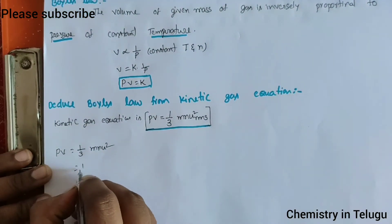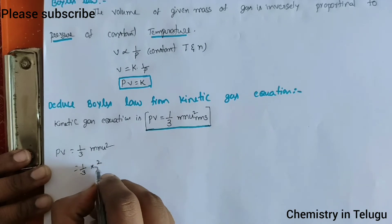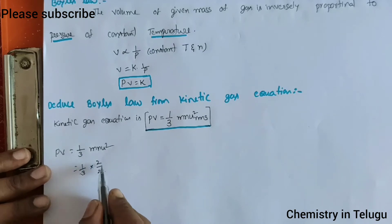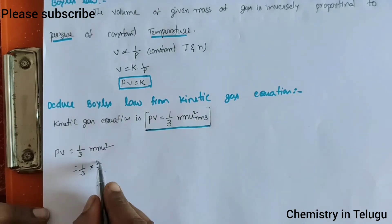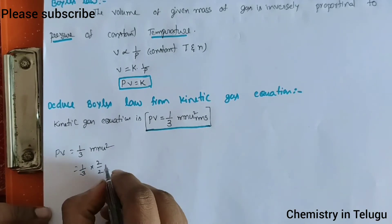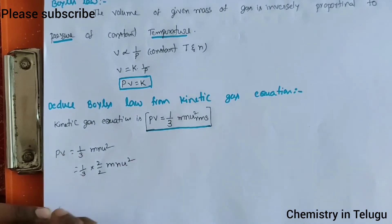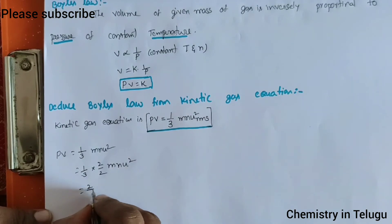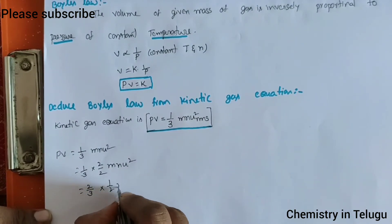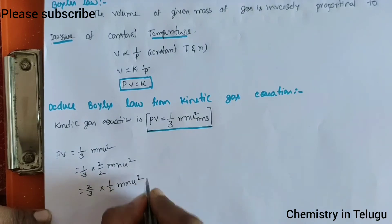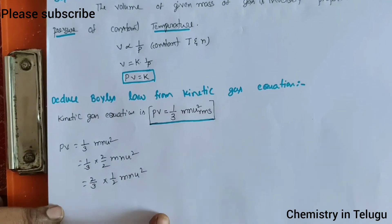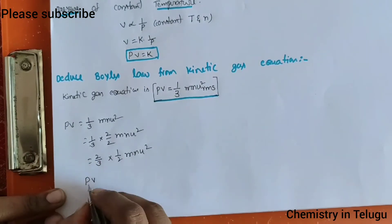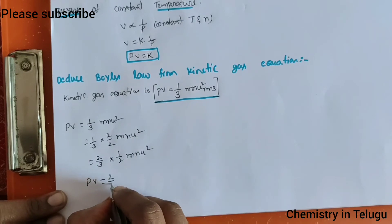Multiplying 1/3 with 2/2 — so 2 by 2, where u is nothing but 1. So the value is equal to 1/2. So 2 by 2 MNu² — MNu².